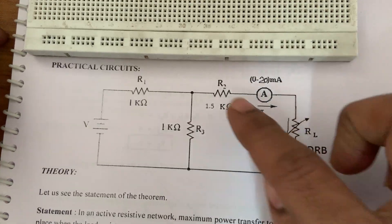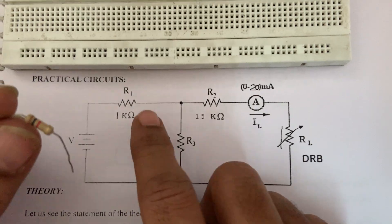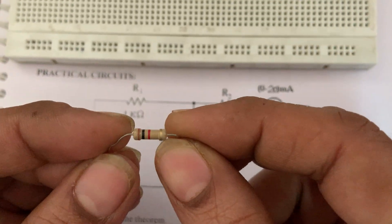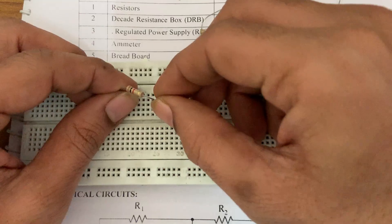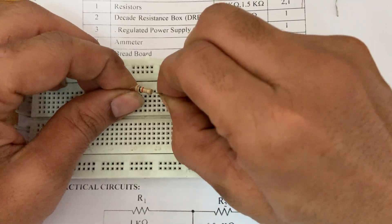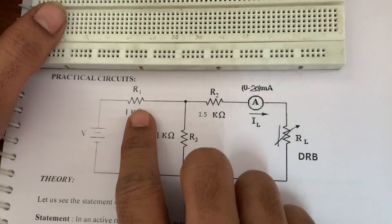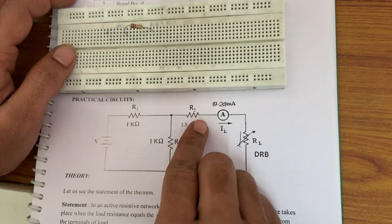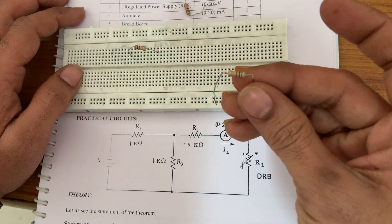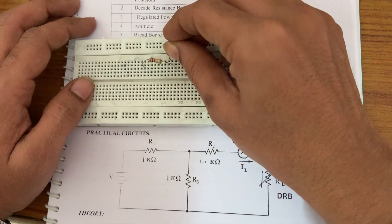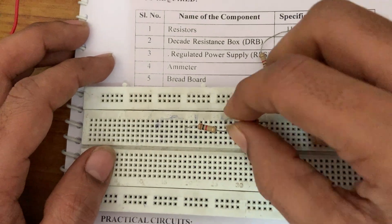Now I am going to give the connections for this circuit. First, I am going to connect the 1 kilo ohm resistance on the breadboard. The second end of the 1 kilo ohm is connected to the first end of the 1.5 kilo ohm resistance. Connect the 1.5 kilo ohm vertically on the same place, and the second end can be placed anywhere on the breadboard.